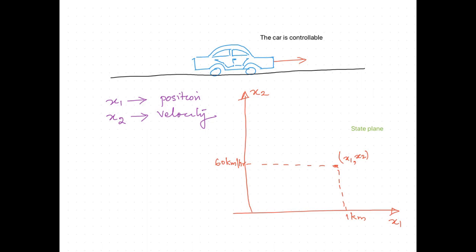Consider a car moving on the road, assumed to be controllable, with two state variables: position and velocity. State is the minimum set of variables required to define the system, and for this system we need only position and velocity. We assume a state plane where the state variables are plotted; for higher dimensions of state variables we would use a state space. When we say the car is controllable, it means the car can be made to reach any position on the road by accelerating and braking, and can speed up to any velocity in the state space.